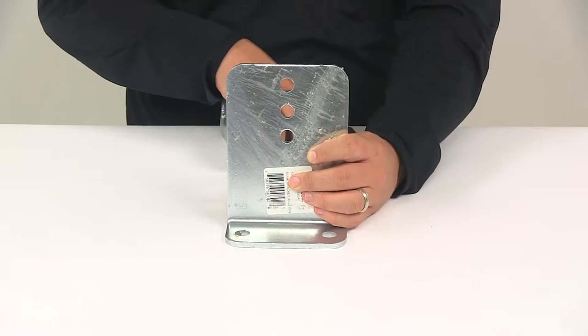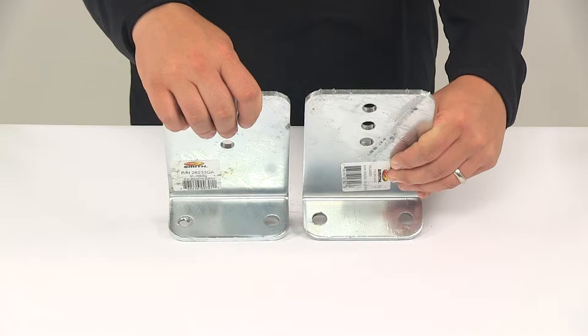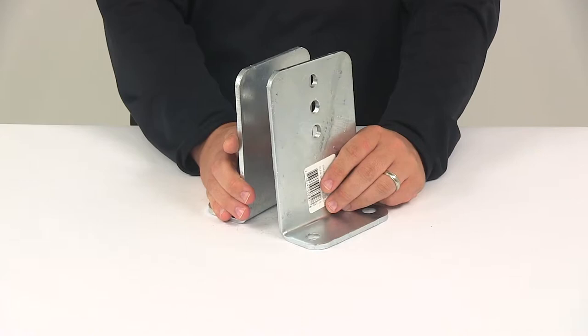It will require two half inch diameter U-bolts for installation. Those would get the brackets mounted to the trailer frames. You can see that we have the two pre-drilled holes in the bottom of each bracket. Again, it's going to require two half inch diameter U-bolts for installation.